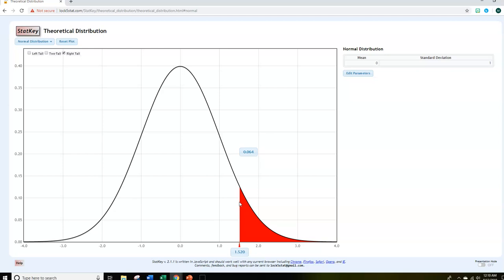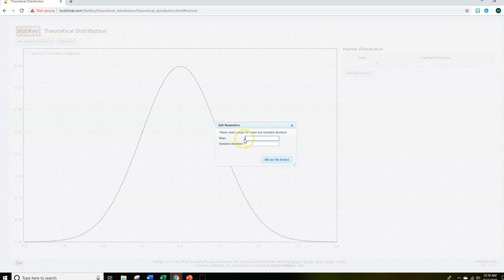Now, let's suppose the number is not in Z-score format. So, let's suppose the numbers I had given you on the previous video were like a mean of 170. So we could go ahead and click reset plot up here.